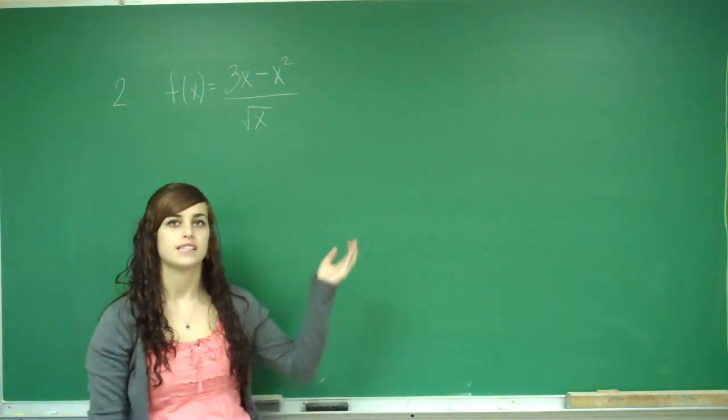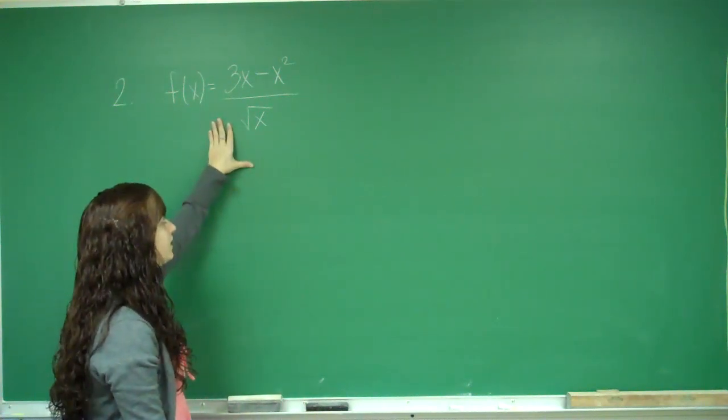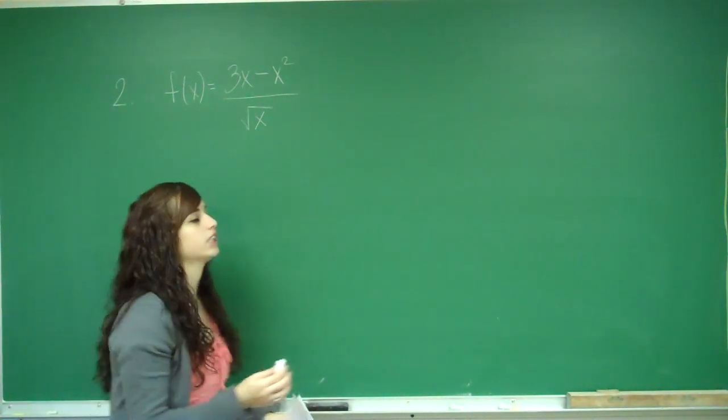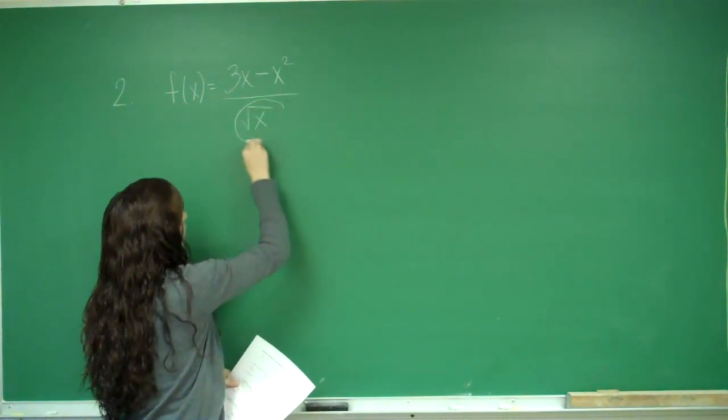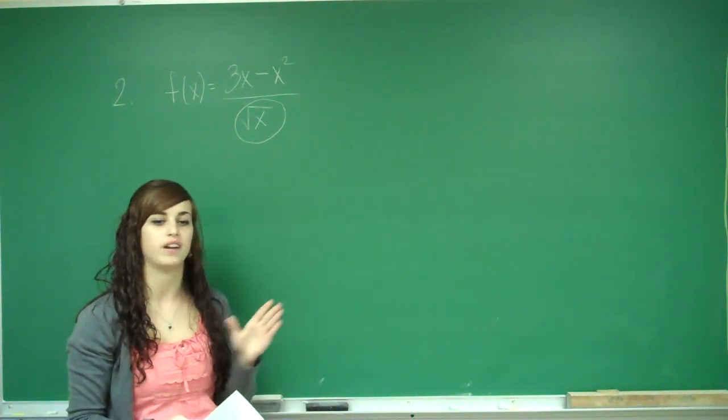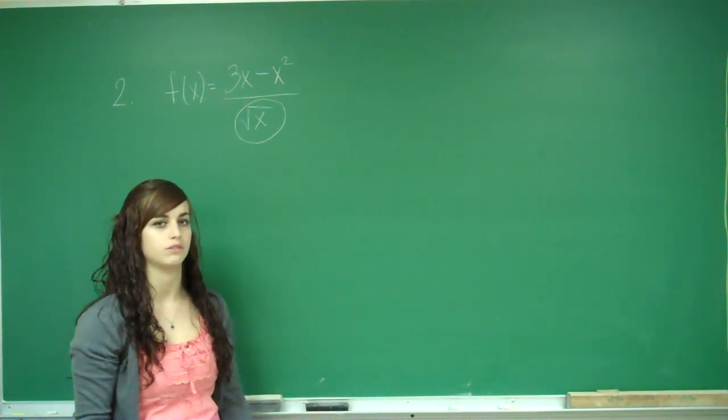When we first see this problem, you might be like, oh, I should use the quotient rule. But what happens is we want to observe that there's only one term on the bottom. And when there's only one term on the bottom, it's faster to split up the fraction than to use the quotient rule.